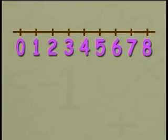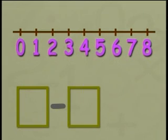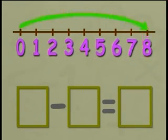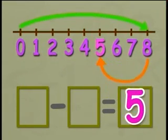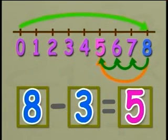Look at the number line and write the number sentence. Arrow above the line points at 8, and the arrow below the line points at 5. We know 5 is the answer. The number sentence will be 8 minus 3 equals 5.